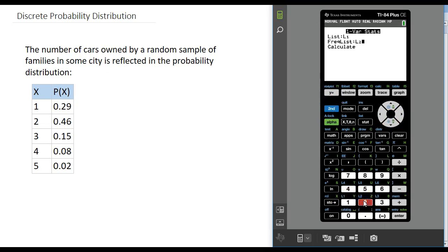To get L2, press the second button and then the two key. We want list to be L1 and frequency list to be L2, then we can calculate. This gives us a mean of 2.08.